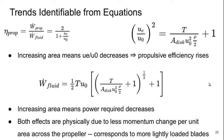So both of these effects are physically due to the fact that there's less momentum change being imparted per unit area across the propeller. This corresponds to the blades being more lightly loaded.